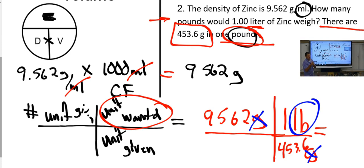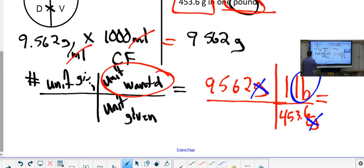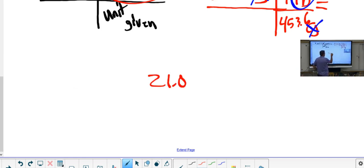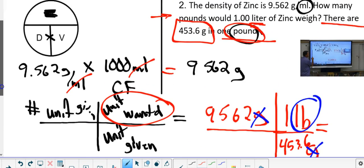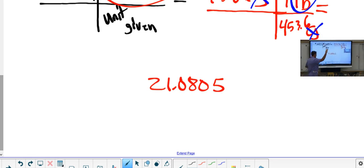We're going to end up with picket fences like this throughout the year — there's no way you can do it in your head. When you get this answer from the calculator, I go back up to my problem and find the least sig figs in a number, and it was the 1.00 liter — that's three sig figs. So I have to round to that place, and the answer is 21.1 pounds.